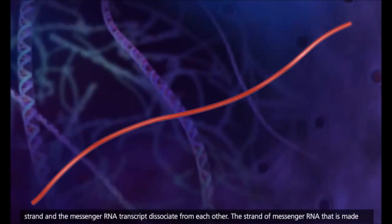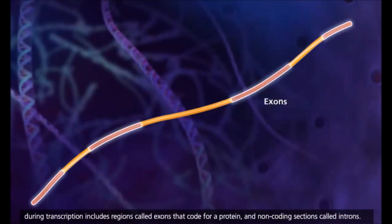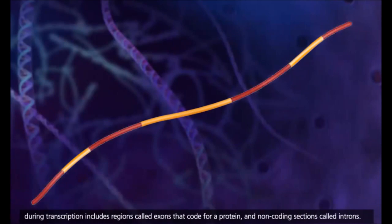The strand of messenger RNA that is made during transcription includes regions called exons that code for a protein, and non-coding sections called introns.